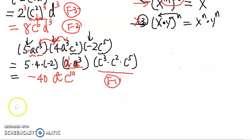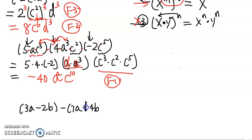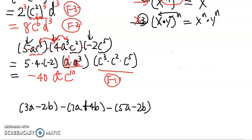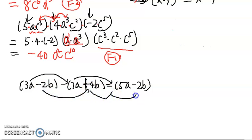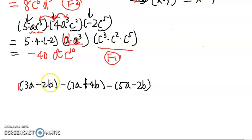The next problem has no multiplication — it's addition and subtraction: 3a minus 2b, minus 7a plus 4b, minus 5a minus 2b. There are two ways to approach this. You could try to do it mentally, but you have to be careful to take the minus signs into consideration — that could lead to mistakes. So what we're going to do is get rid of all the parentheses first and then combine like terms. There's no number in front of the first parentheses, so we just put a 1 there and distribute.